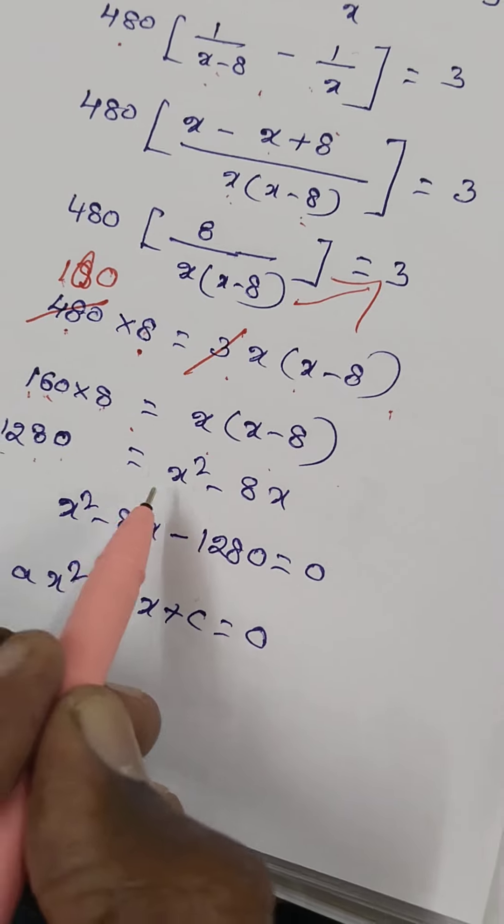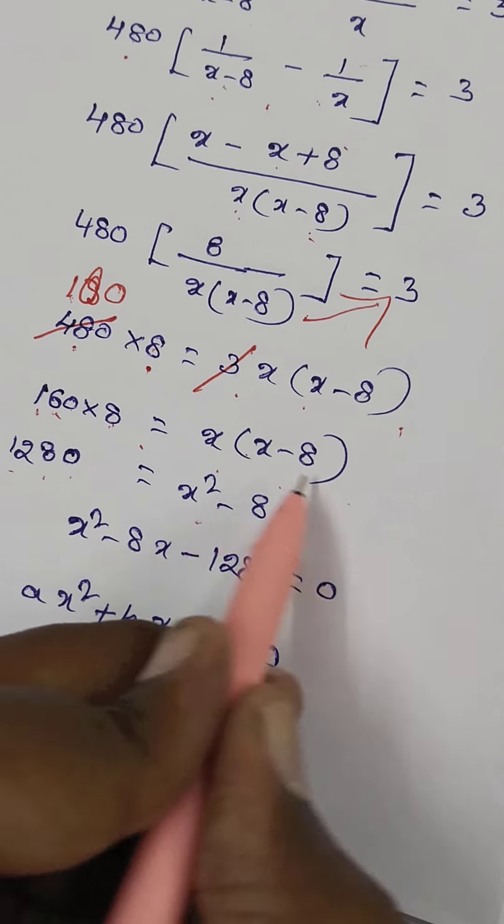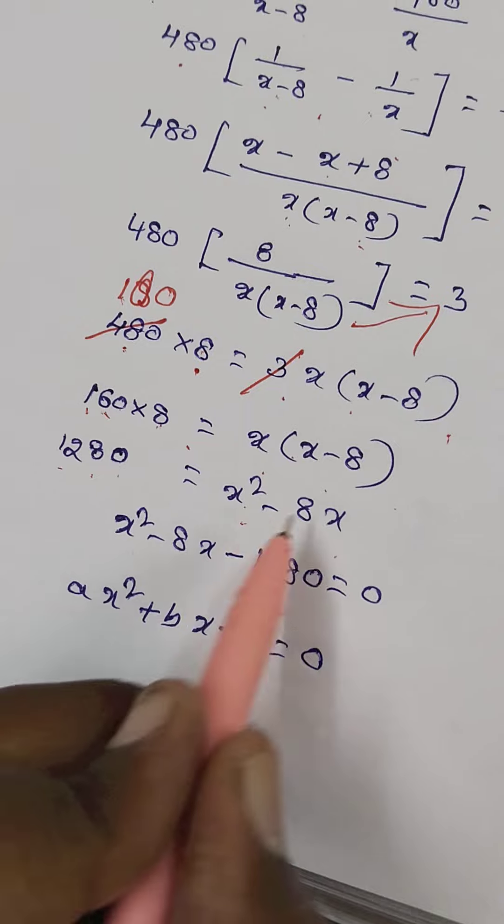1280 equals x squared minus 8x. So x squared minus 8x, taking this to the right side, becomes x squared minus 8x minus 1280 equals 0.